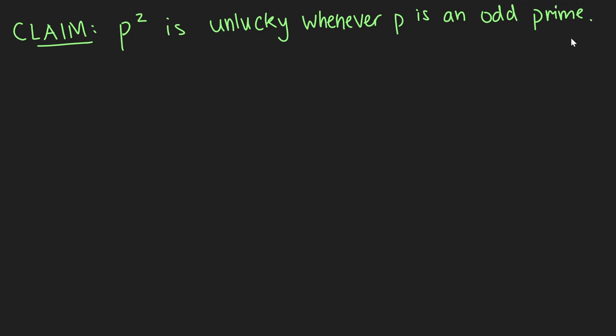So I claim that p squared is an unlucky number whenever p is an odd prime. And obviously there are infinitely many odd primes, so essentially I'm claiming that there are infinitely many unlucky numbers. Let's prove this claim.